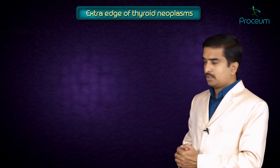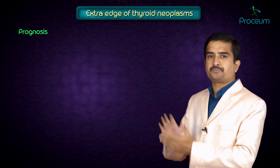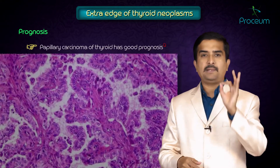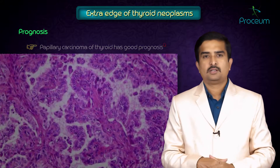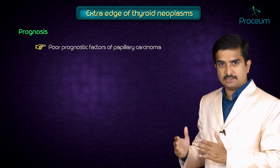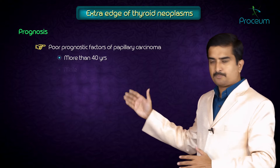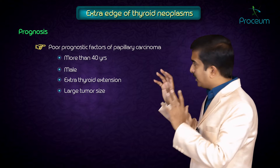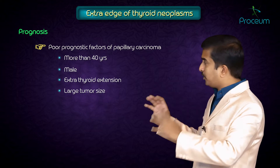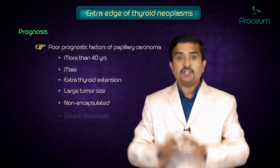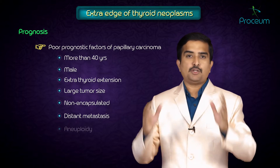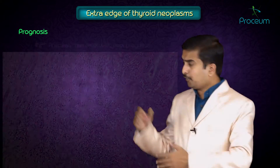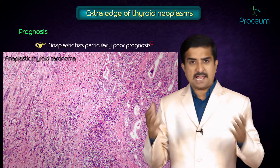Let us discuss overall prognosis. Out of all the different types of thyroid cancers, papillary has a good prognosis. The poor prognostic factors include: age more than 40 years, male gender, extra-thyroid extension, large tumor size, non-encapsulated tumor, distant metastasis, and aneuploidy — all are considered poor prognostic markers.